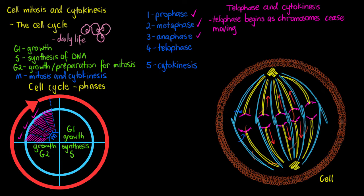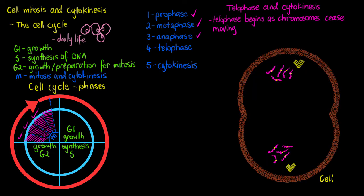Now we're about to see something we haven't seen so far in mitosis. Our cell has elongated so much that it's taken on an almost figure-eight type of shape, pinching off toward the middle.